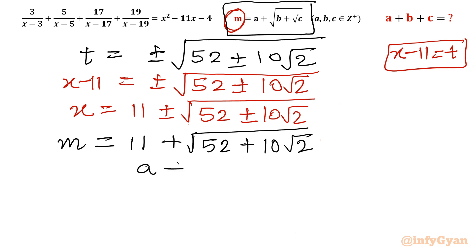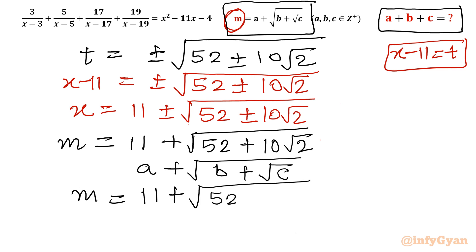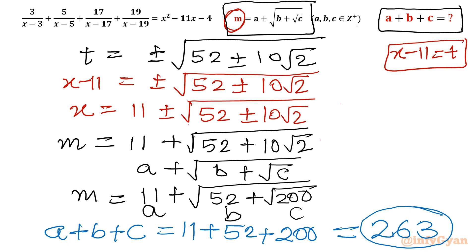Comparing with the form m = a + √b + √c, we take the 10 inside the square root: m = 11 + √52 + √200. So a = 11, b = 52, c = 200. Therefore a + b + c = 11 + 52 + 200 = 263. That's our final answer. I hope you liked this video — don't forget to like, share, and subscribe. Bye-bye!